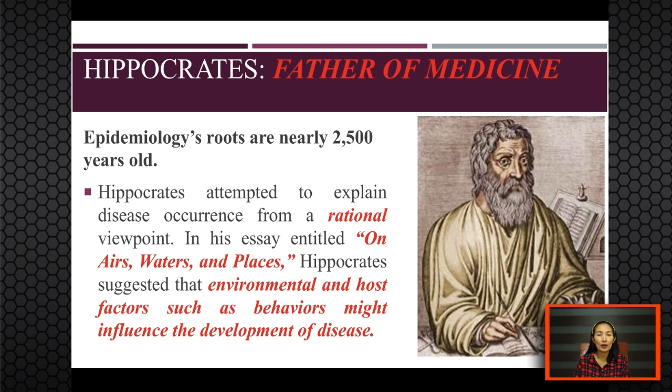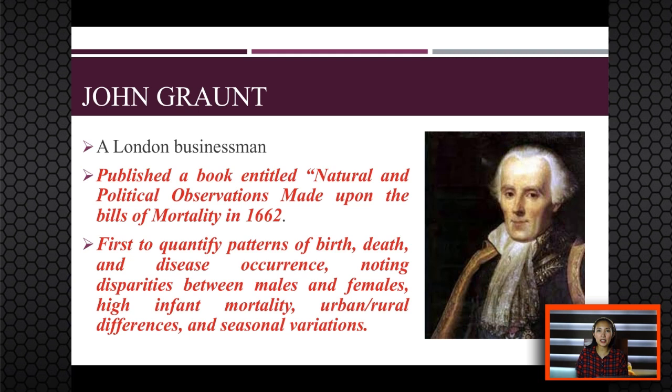The next person in our list of significant contributors is John Graunt, a London businessman who published a book titled 'Natural and Political Observations Made Upon the Bills of Mortality' in 1662. This book contains analysis of 50 years of data extracted from the Bills of Mortality. It was the first to quantify patterns of birth, death, and disease occurrence, noting disparities between males and females.